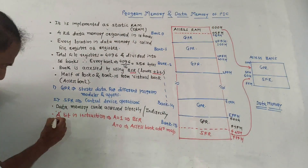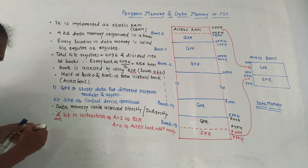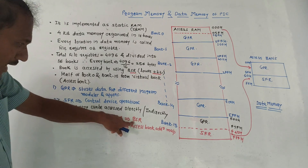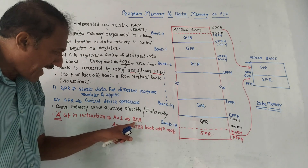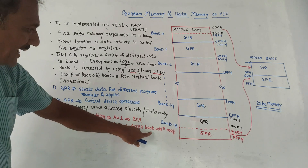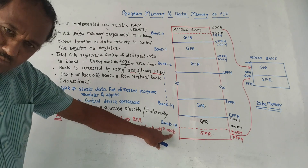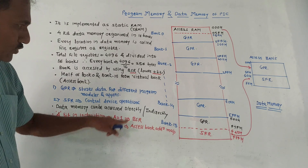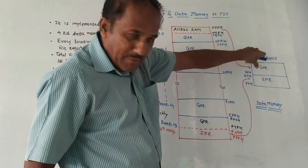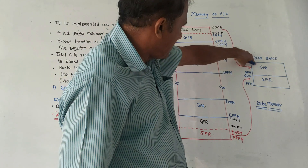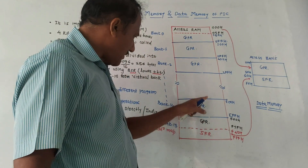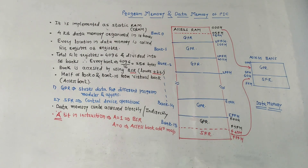There is a bit called the access bit (A). If the value of this bit is one, it indicates you should use BSR — Bank Select Register — to access data memory. If the value of A is zero, by default you are using the access bank. The access bank's lower half is GPR and the upper half is SFR taken from the lower part of bank 15.